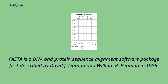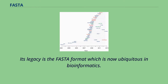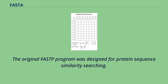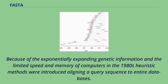FASTA is a DNA and protein sequence alignment software package first described by David J. Lippman and William R. Pearson in 1985. Its legacy is the FASTA format which is now ubiquitous in bioinformatics. The original FAST program was designed for protein sequence similarity searching. Because of the exponentially expanding genetic information and the limited speed and memory of computers in the 1980s, heuristic methods were introduced aligning a query sequence to entire databases.